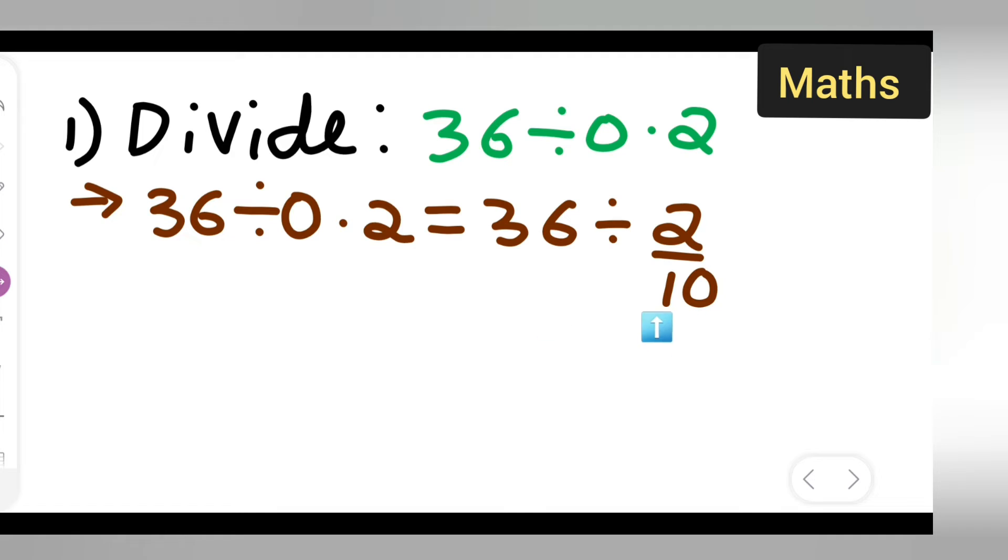The decimal point is in the 10th place, so that's why it is 10, only one point here. So now what I'll have to do is: how are you going to divide? You have to take the reciprocal of this, 36 multiplied by 10 upon 2.